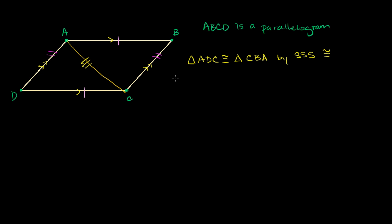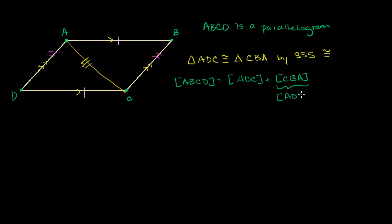If I want to find the area of parallelogram ABCD, it's equal to the area of triangle ADC plus the area of triangle CBA. But the area of CBA is the same as the area of ADC because they are congruent by side-side-side. So this is just two times the area of triangle ADC, which is convenient because we know how to find areas of triangles.